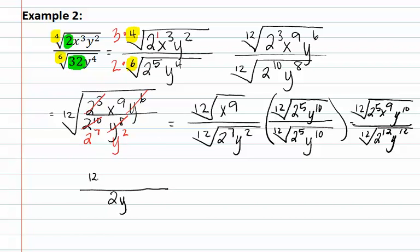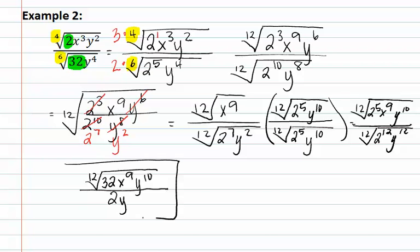Our new numerator is the 12th root of 2 to the 5th, x to the 9th, y to the 10th. And our denominator is the 12th root of 2 to the 12th, y to the 12th. As you can see, the denominator simplifies further — we can bring a 2 out and a y out, giving us 2y in the denominator. In the numerator, there is not enough of the 2's, the x's, or the y's to come out, which means we have the 12th root of 32 x to the 9th, y to the 10th. Remember, you must change your 2 to the 5th back to its number, 32, for it to be the final answer.